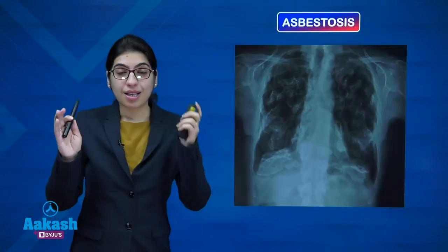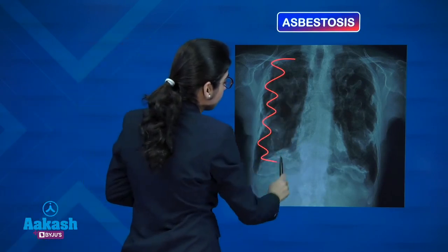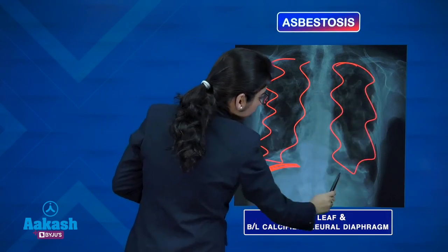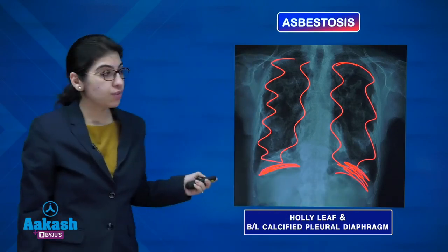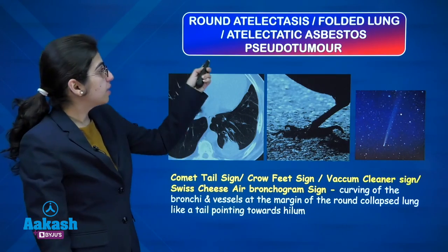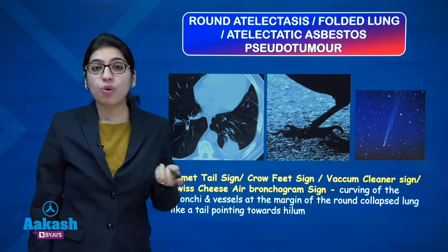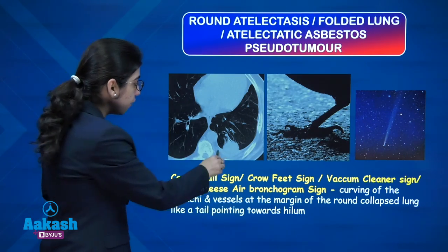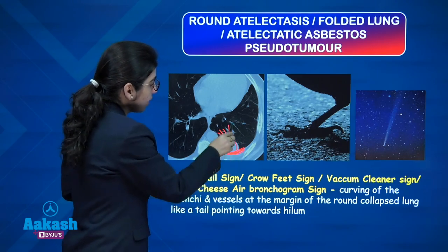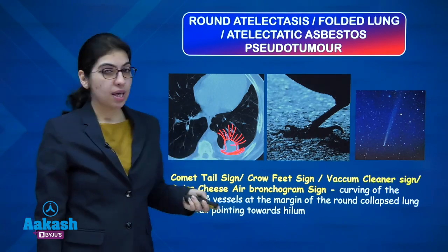In asbestosis, the classical picture is bilateral calcified pleural plaques resembling holly leaf, with calcification along the diaphragmatic pleura being the most specific feature. An additional feature is round atelectasis — also called folded lung or atelectatic asbestos pseudotumour — which is a folded lung adjacent to thickened visceral pleura. The bronchovascular markings abutting this region produce the comet tail sign.